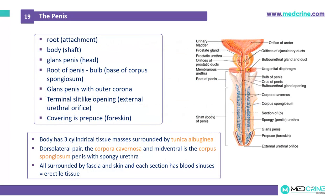The penis has three parts: the root, the body, and the glans penis with the head. The root of the penis is found at the base of the corpus spongiosum, and the glans penis has an outer corona with a terminal slit opening known as the external urethral orifice, covered by a foreskin or prepuce. The shaft of the penis has three cylindrical masses surrounded by tunica albuginea: the dorsolateral aspect has the corpora cavernosa, and the mid-ventral aspect is the corpus spongiosum, which contains the spongy urethra. The penis is surrounded by fascia and skin, and each section has blood sinuses forming erectile tissue.